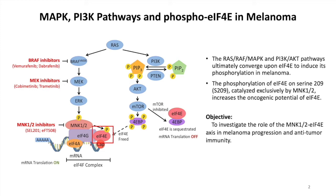EIF4E is a cap-binding protein that facilitates mRNA translation in eukaryotic cells. It has only one phosphorylation site, S209, that is exclusively phosphorylated by kinases MINK1 and 2. This phosphorylation has been associated with melanoma progression, and in this paper, we investigated the role of the MINK-EIF4E axis in melanoma progression and anti-tumor immunity.